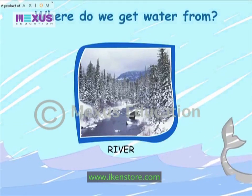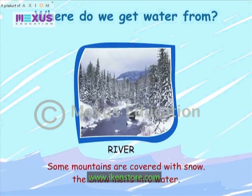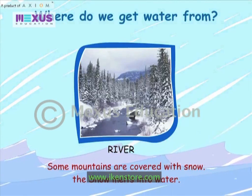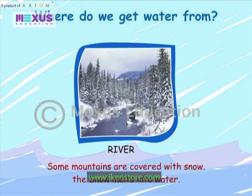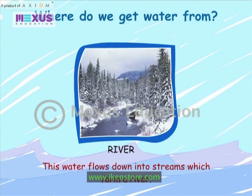River. Some mountains are covered with snow. The snow melts into water. This water flows down into streams which form a river.